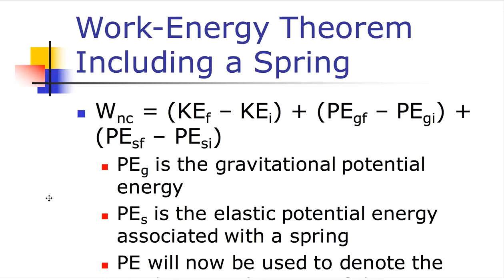The work-energy theorem when we get involved with a spring: if energy is lost, the work done on the system equals the change in energy of the system. In this case, we have to include the potential energy of springs. So we now have two types of potential energy: the potential energy of gravity and the potential energy of a spring. All three — kinetic energy, gravitational PE, and spring PE — can be present in a single problem.